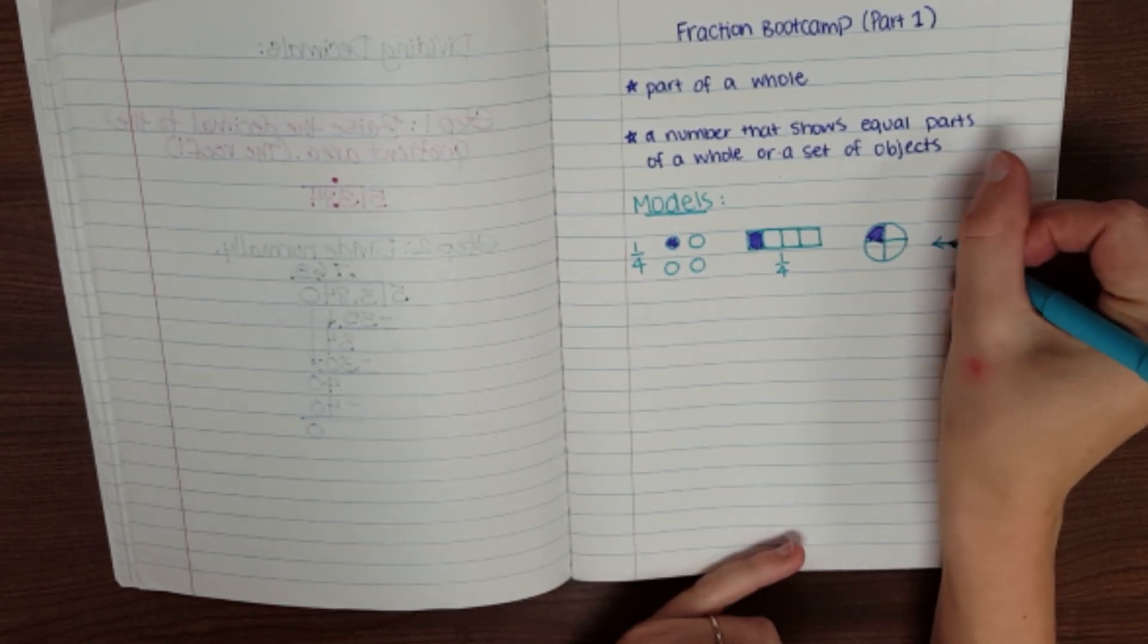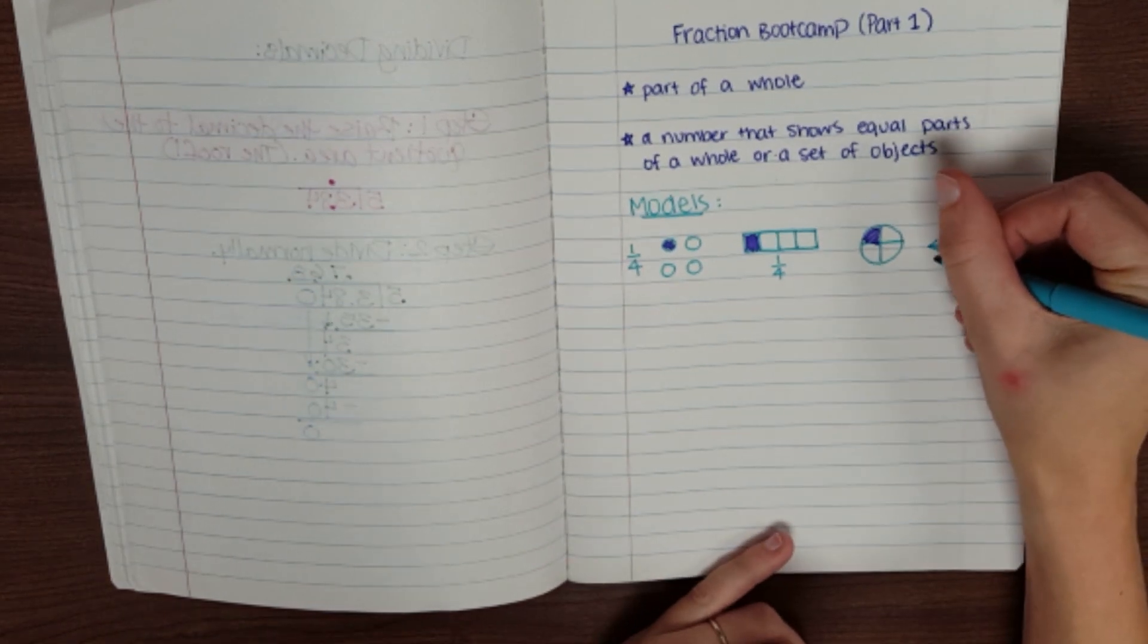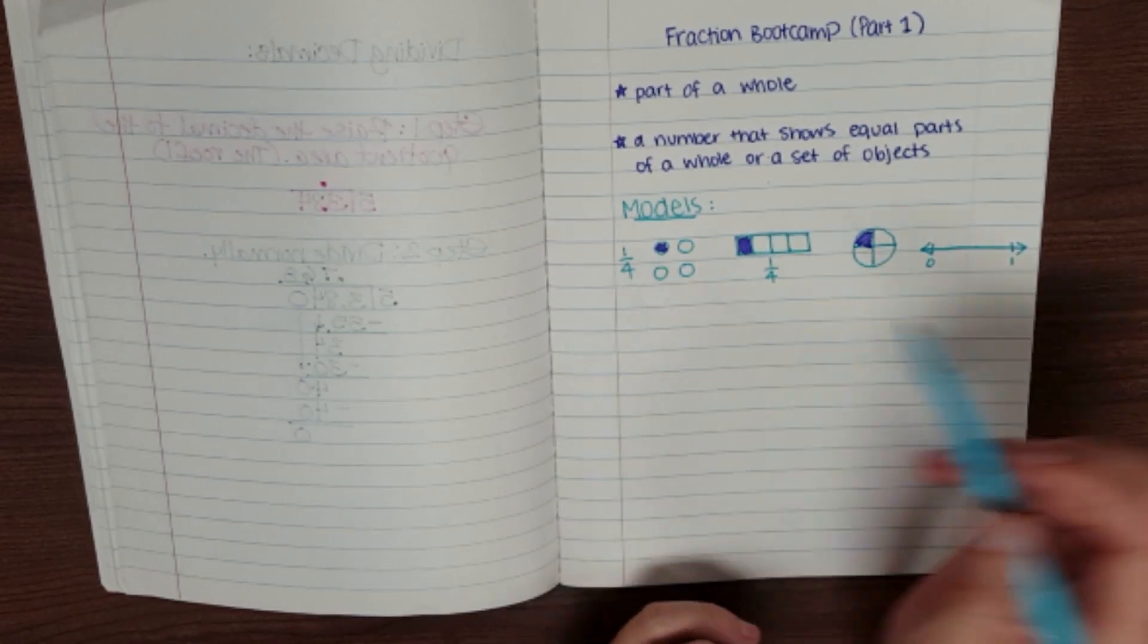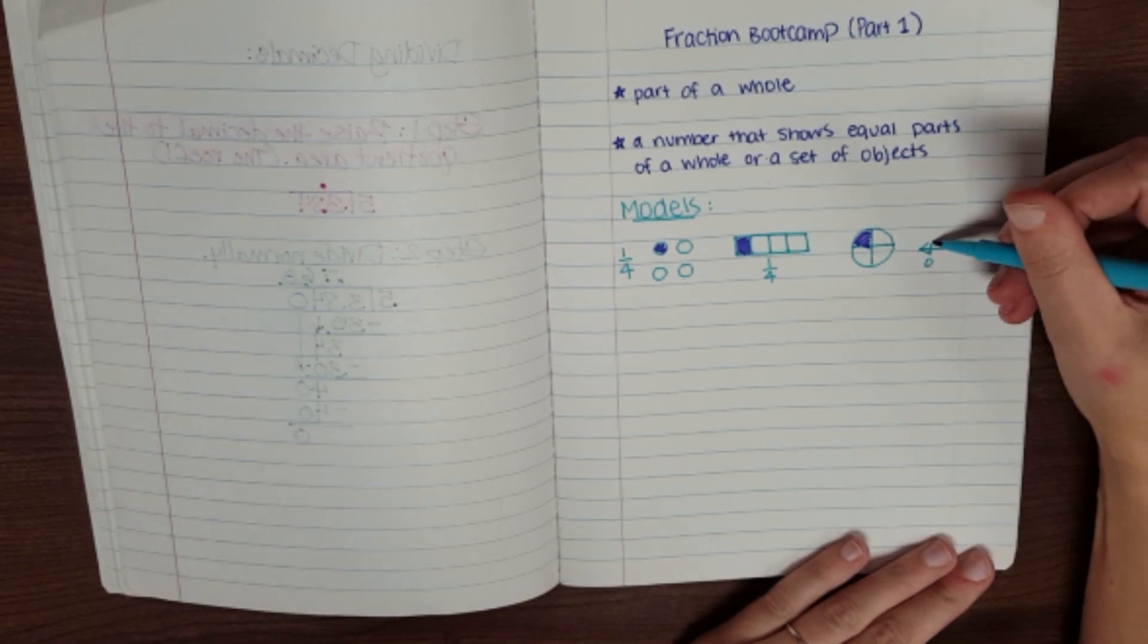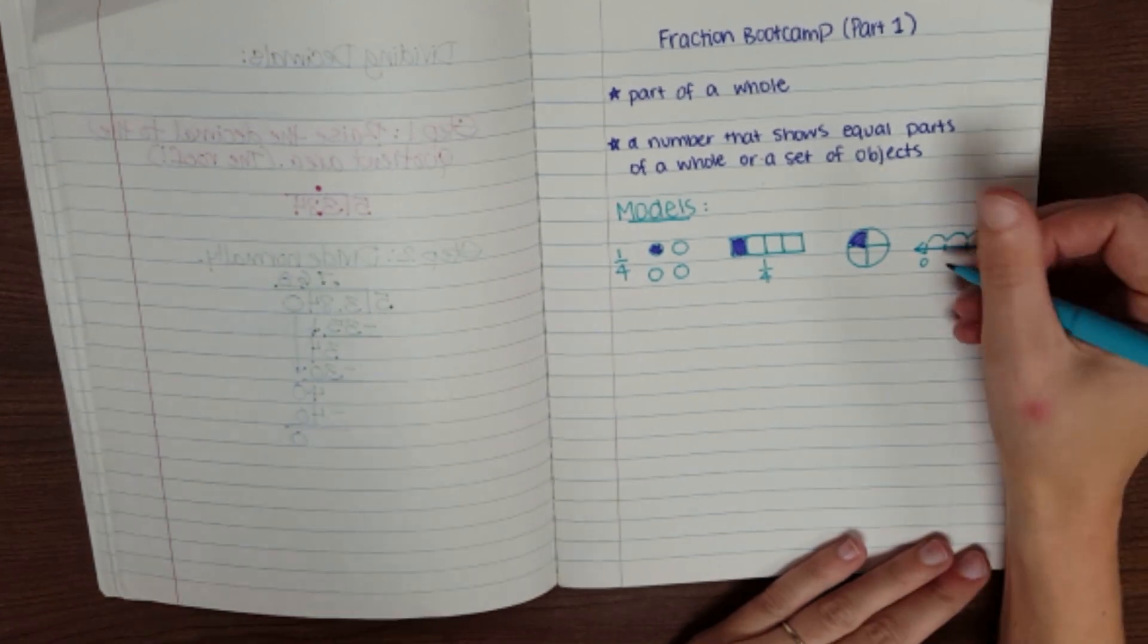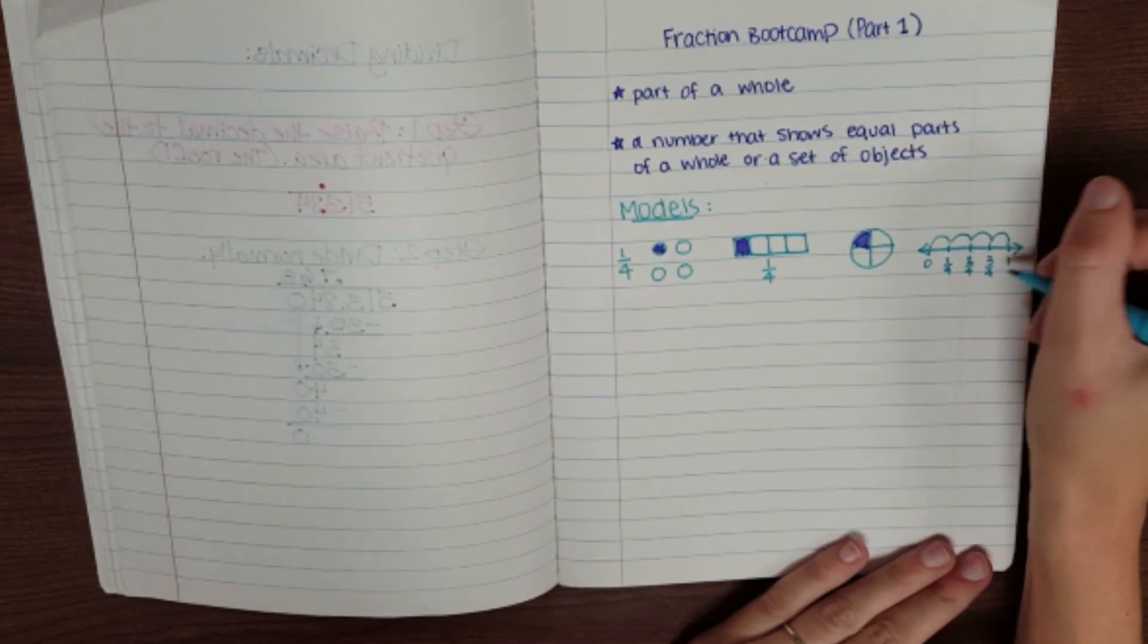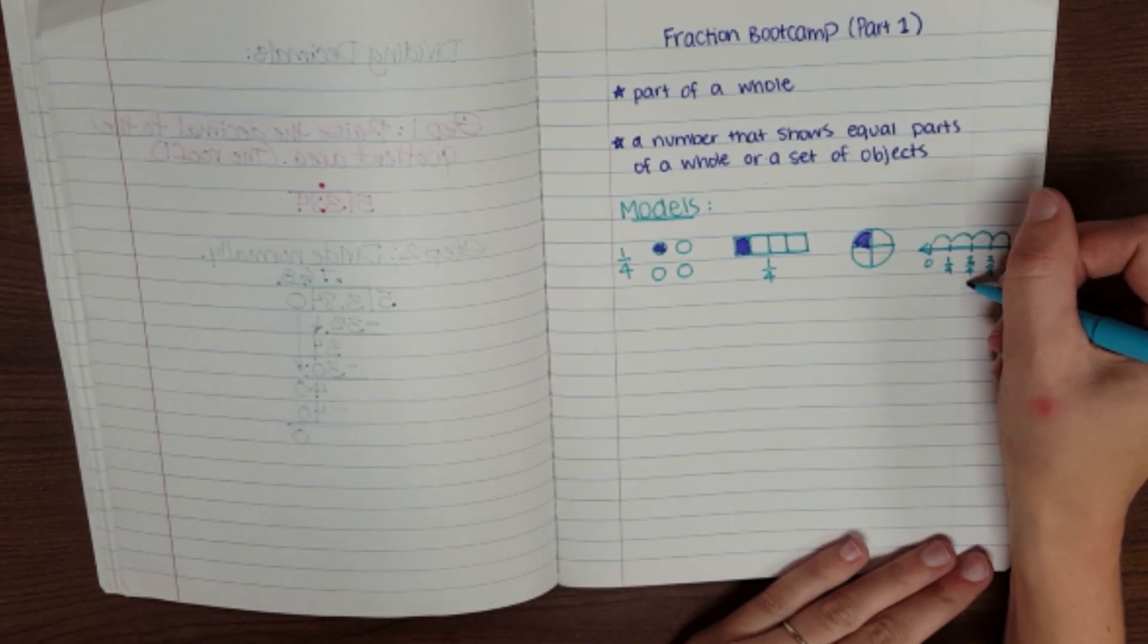Or you might see it as a number line. Usually these number lines are going to be going from zero to one. And it will be split into four parts. Just like your fraction bar, just like your fraction circle, just like your group. It's split into four parts. I've got one, two, three, four parts. They might be labeled one-fourth, two-fourths, three-fourths, and one whole. That's your four-fourths. You might also see this two-fourths with its equivalent fraction one-half.